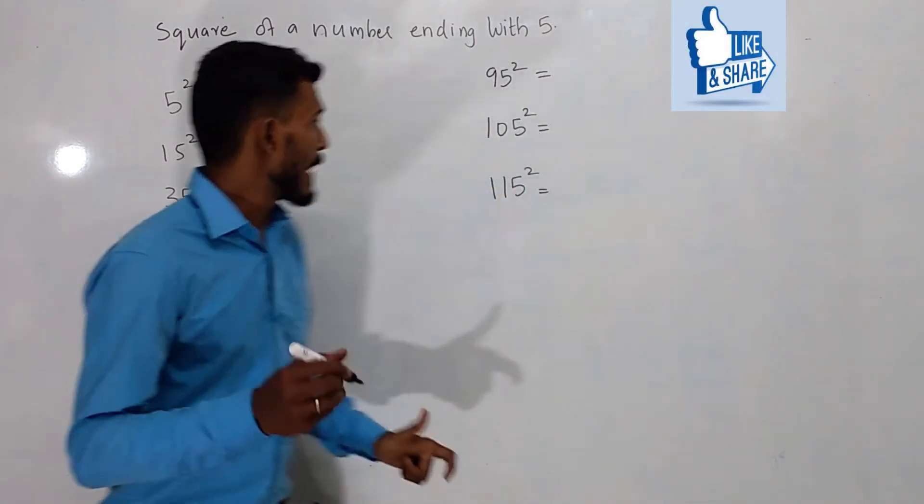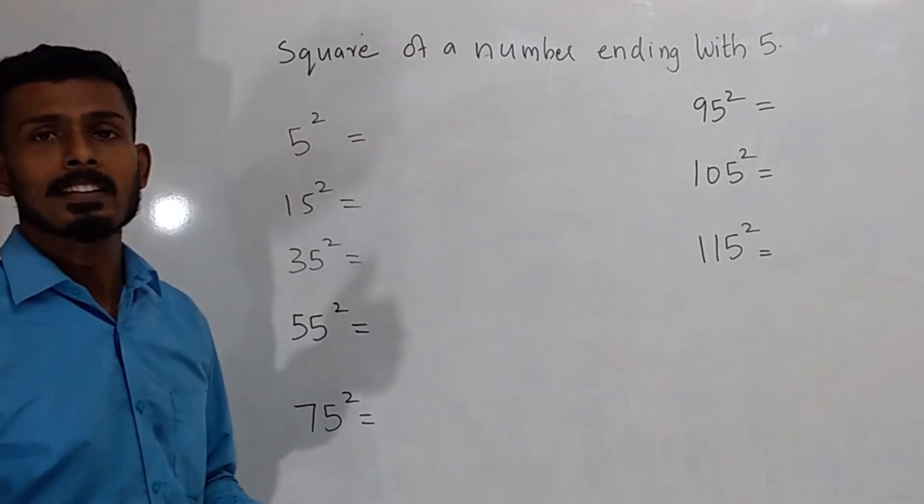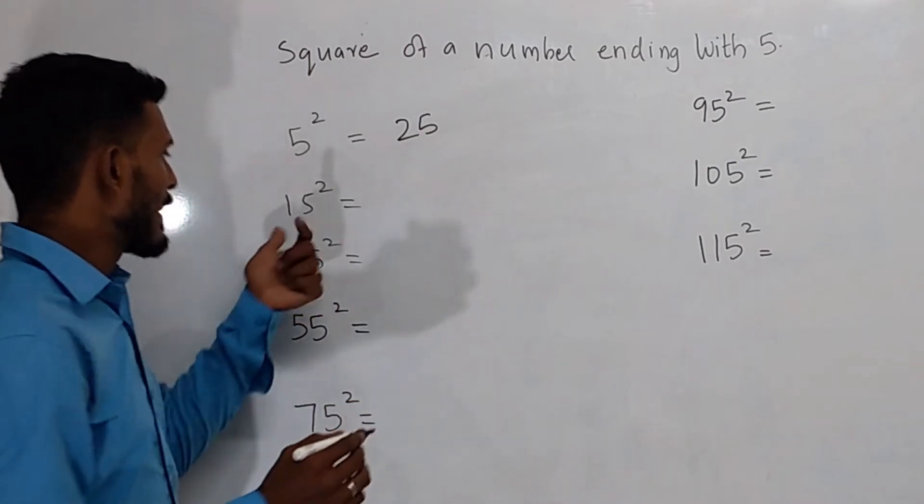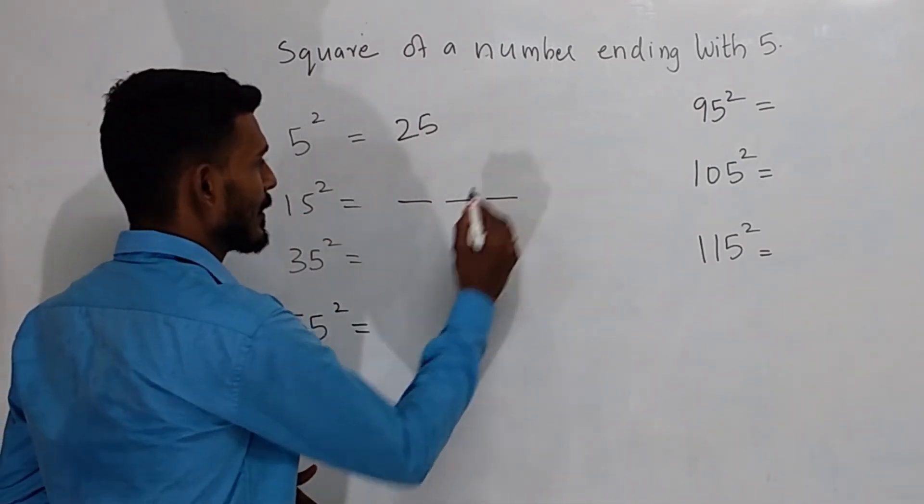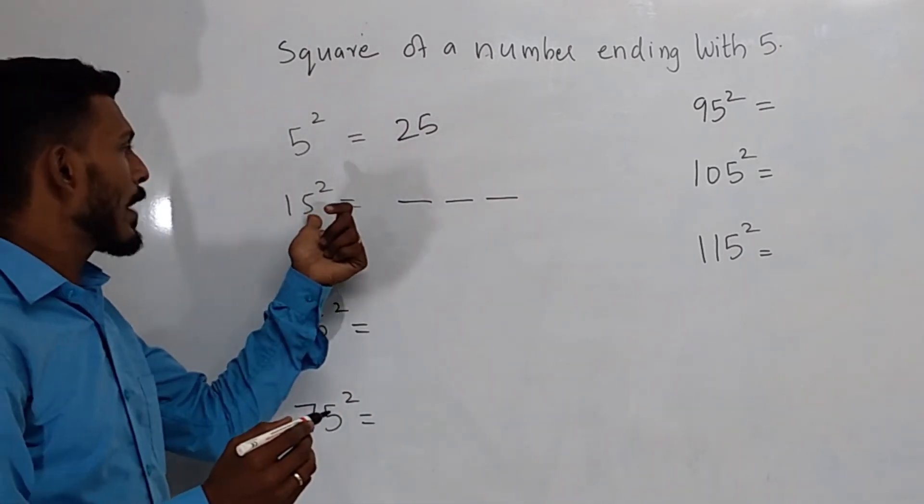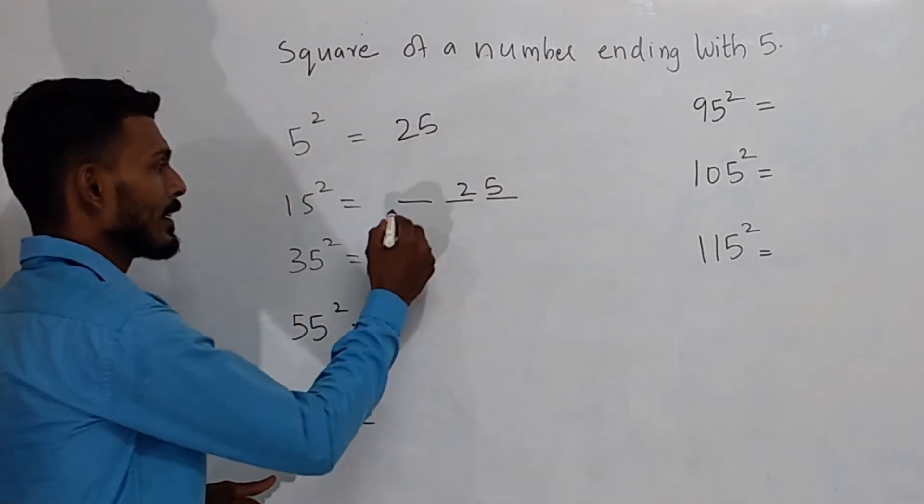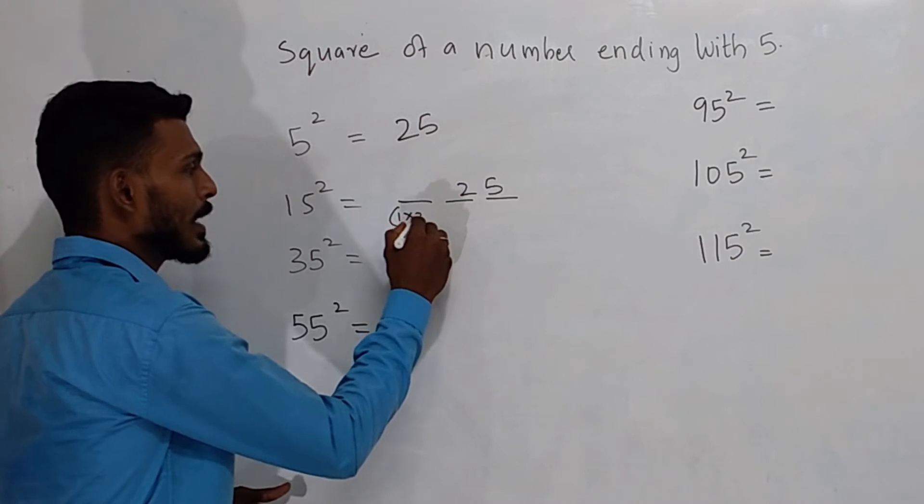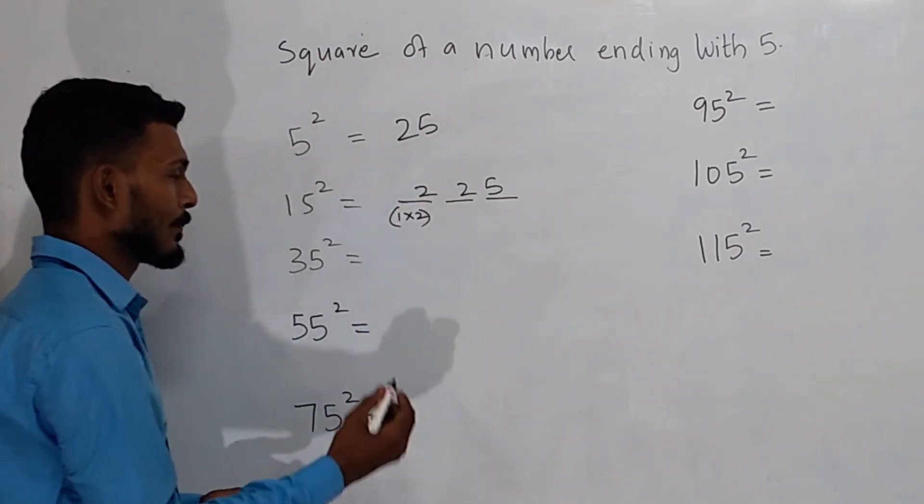First of all, we know that 5 square is nothing but 5 into 5. We will be getting the answer as 25. Now for the next thing, 15 square, we have to make 3 dashes. For 5 square, we get the value as 25. So write it as it is. Then write this number over here, multiply it with the next number. We will be getting 1 into 2, that is 225.